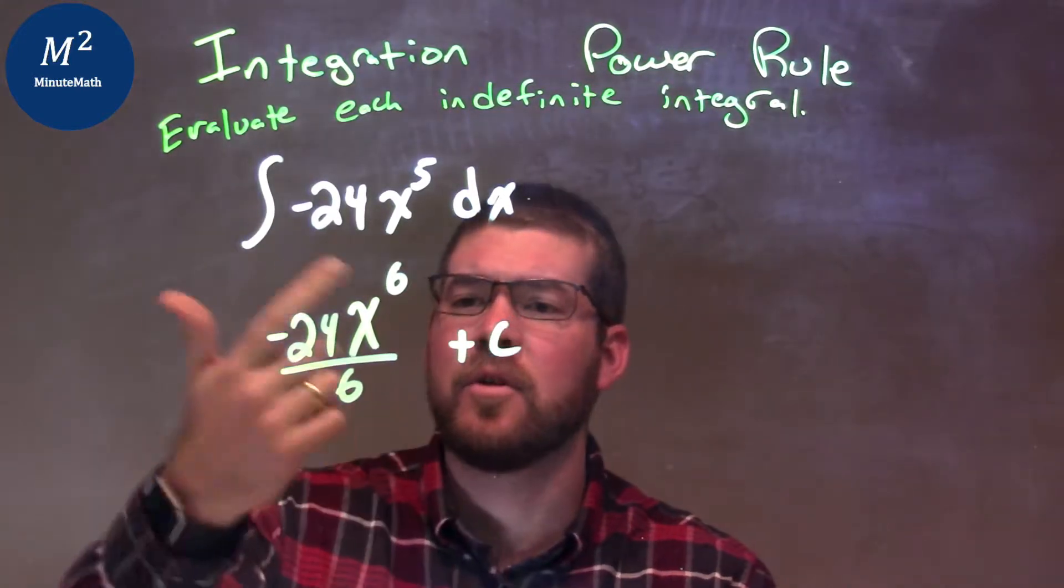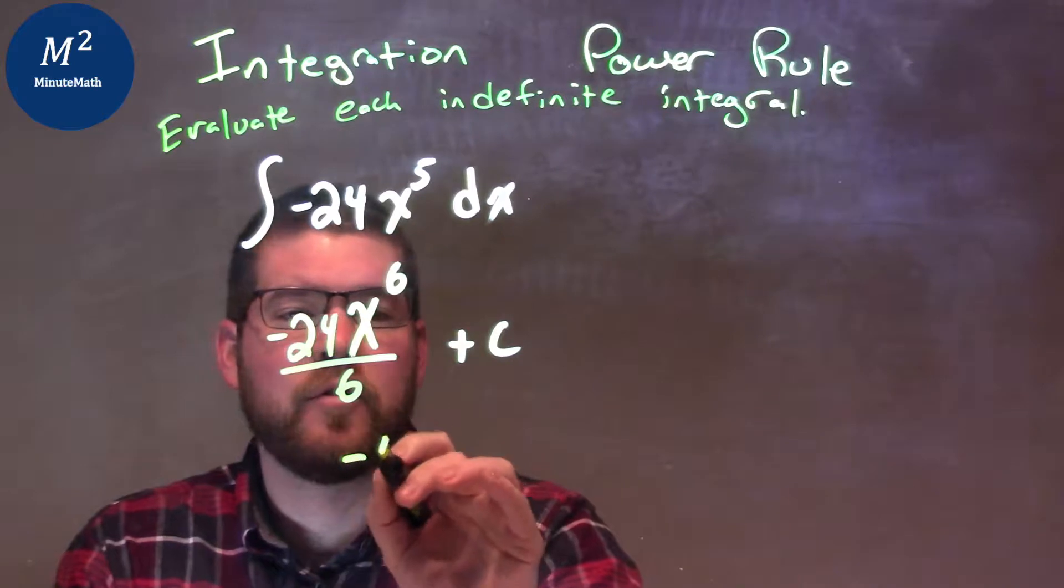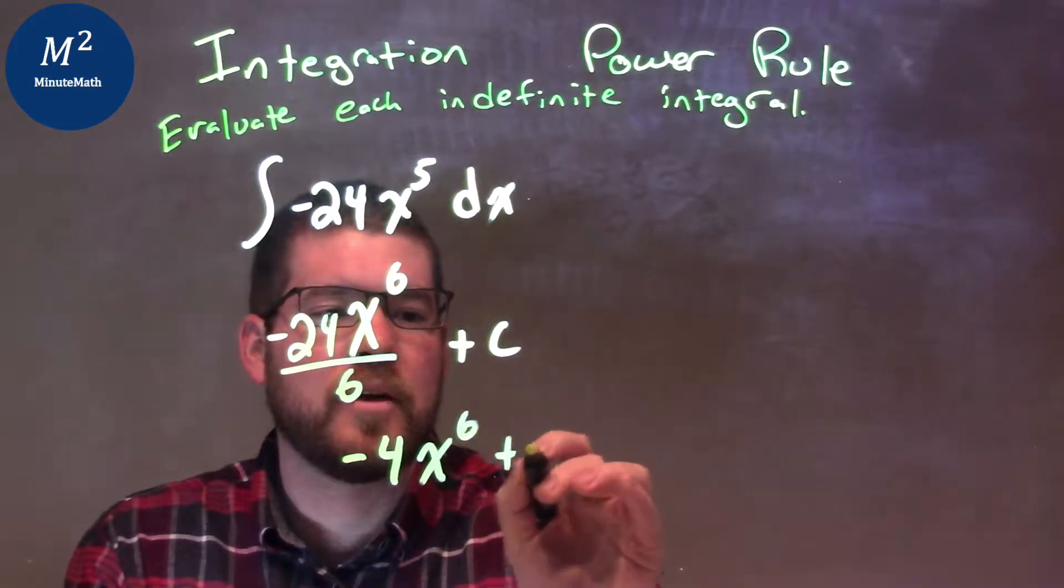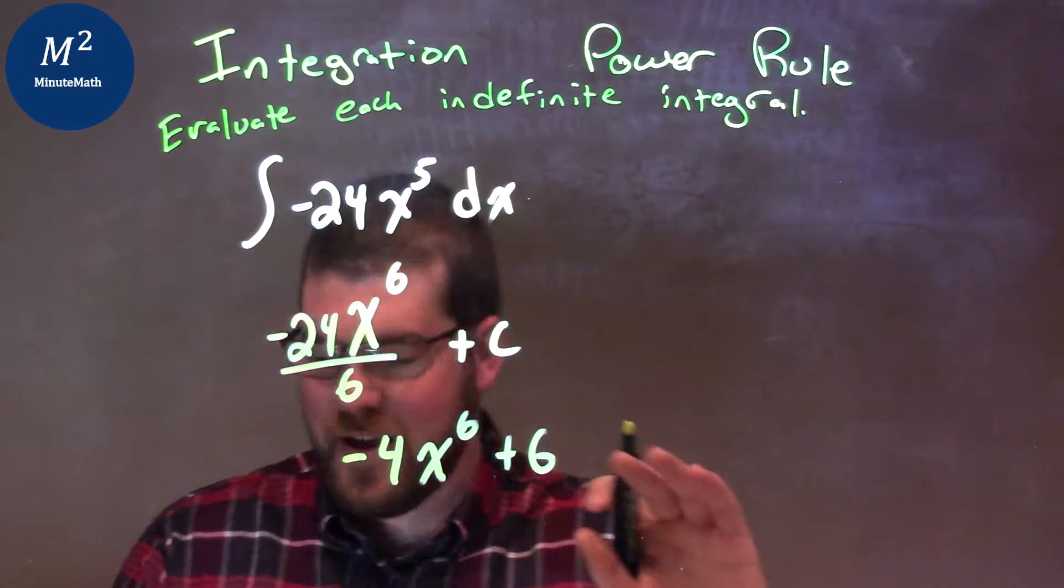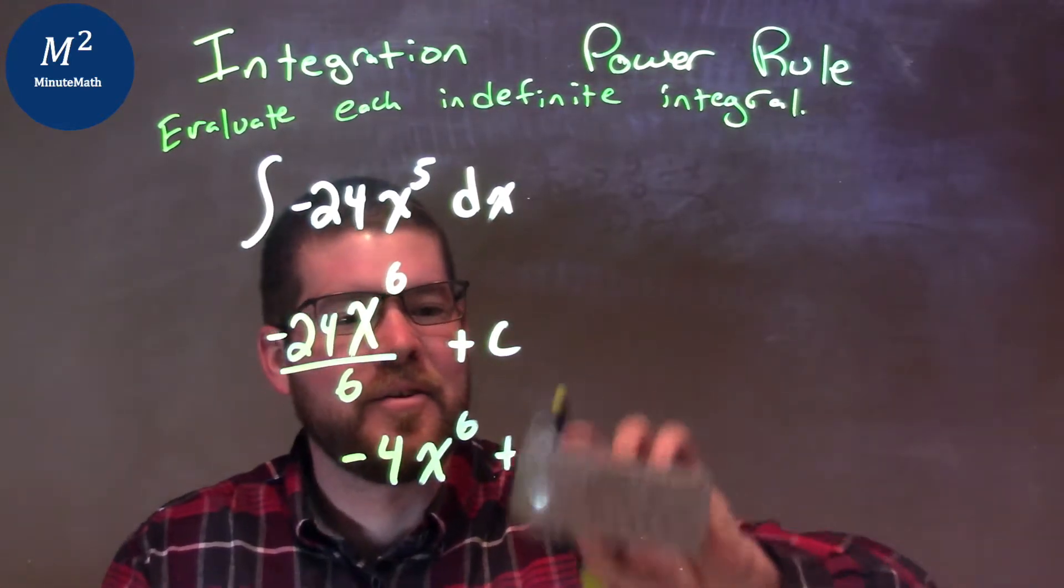Well, I can simplify this. 6 goes into 24, 4 times. And so we have negative 4x to the 6th power plus c, oops, plus c, not 6, plus c.